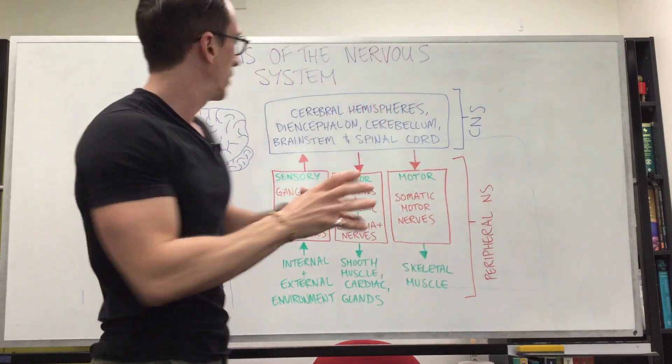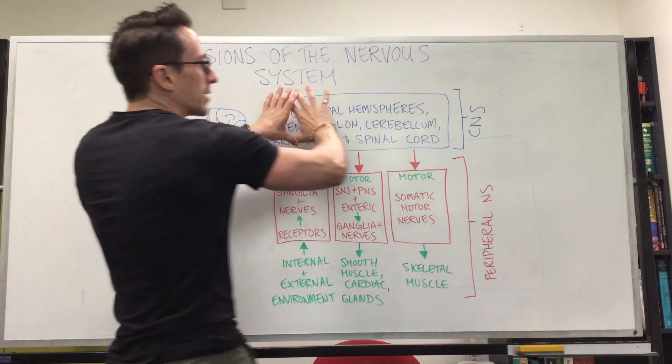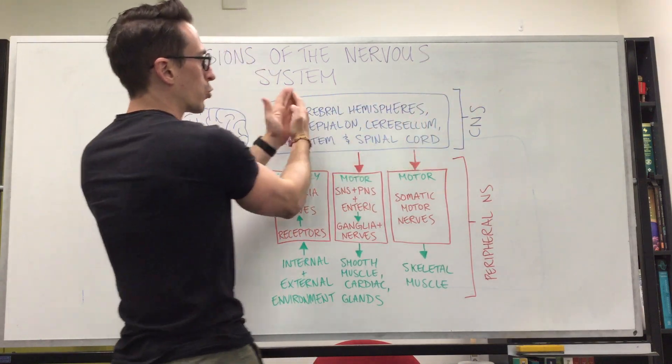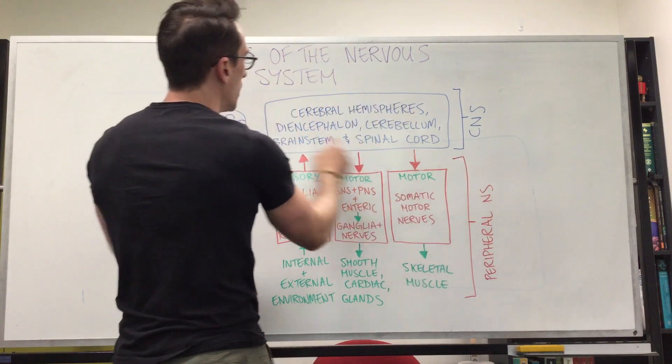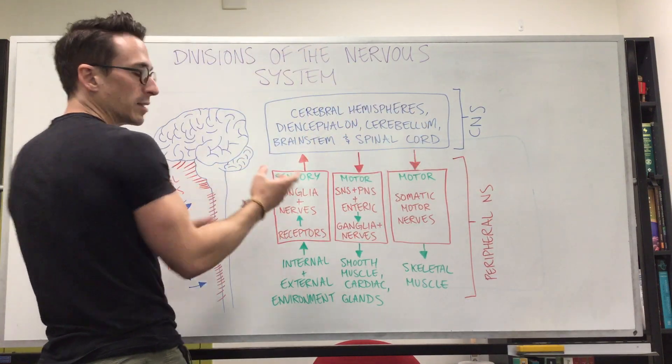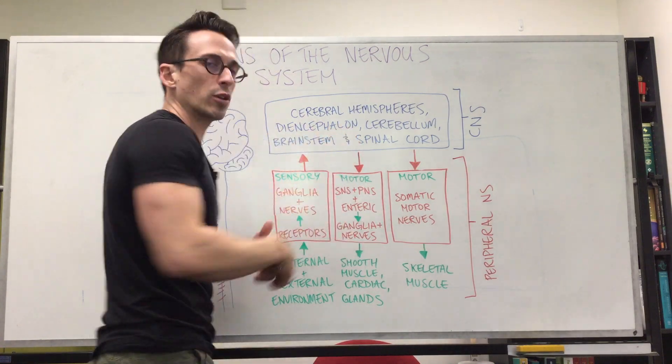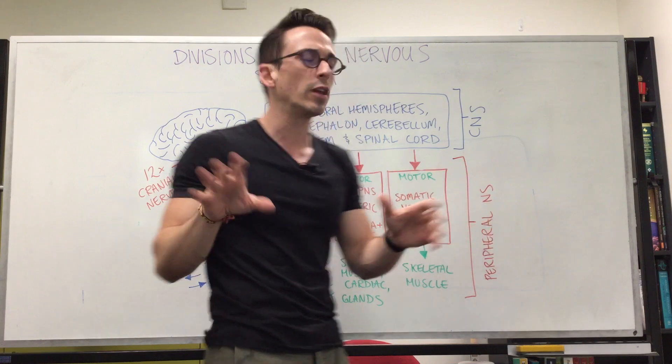Let's divide this peripheral nervous system into its functional components. We've got our central nervous system here comprised of the cerebral hemispheres, the two halves of the brain. The diencephalon, the cerebellum. Cerebellum means small brain. Diencephalon refers to things like the thalamus and the hypothalamus.